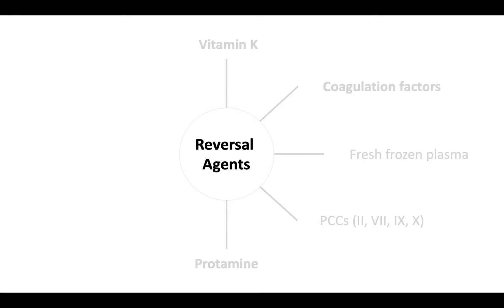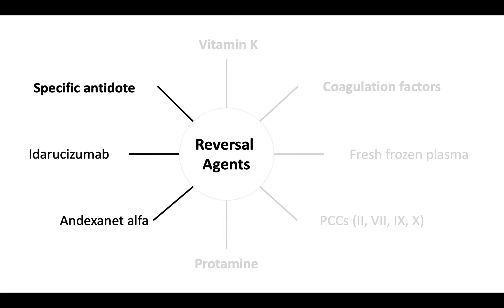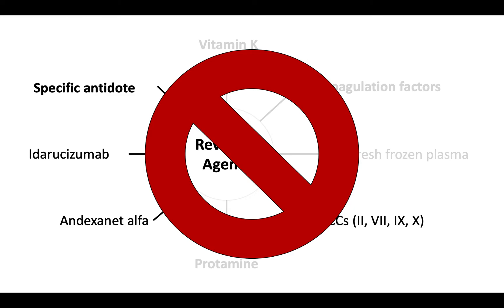Finally, you can give a specific antidote. The available antidotes are idarucizumab for dabigatran and andexanet-alpha for the direct oral factor Xa inhibitors. Note that both idarucizumab and andexanet-alpha increase thrombosis risk. Prothrombin complex concentrates also increase thrombosis risk; therefore, reversal agents and prothrombin complex concentrates should not be combined.